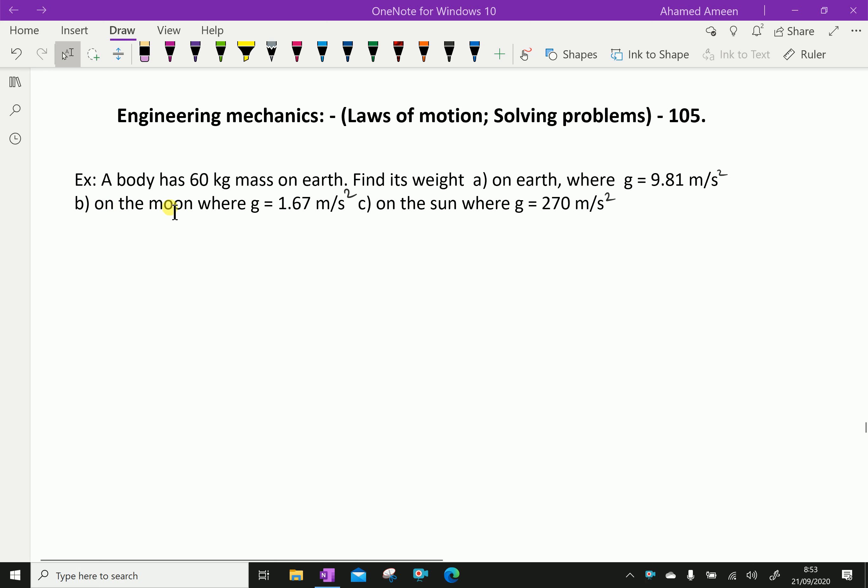Example: A body has 60 kg mass on earth. Find its weight on earth where g is 9.81 meter per second squared, on the moon where g is 1.67 meter per second squared, and on the sun where g is equal to 270 meter per second squared.